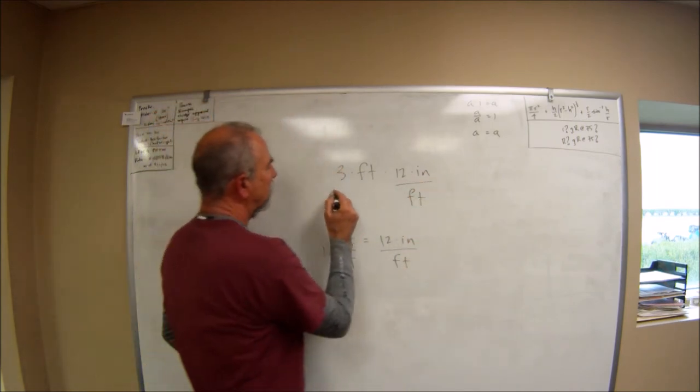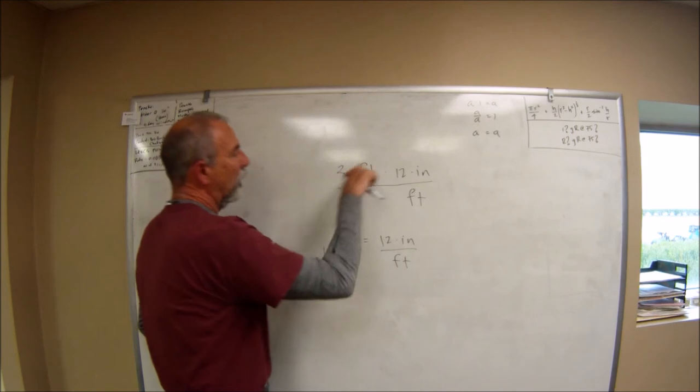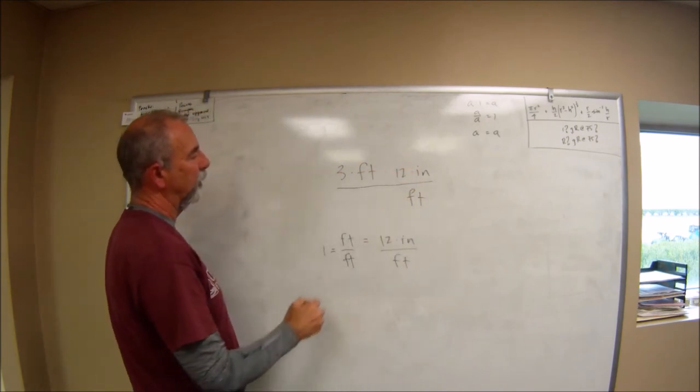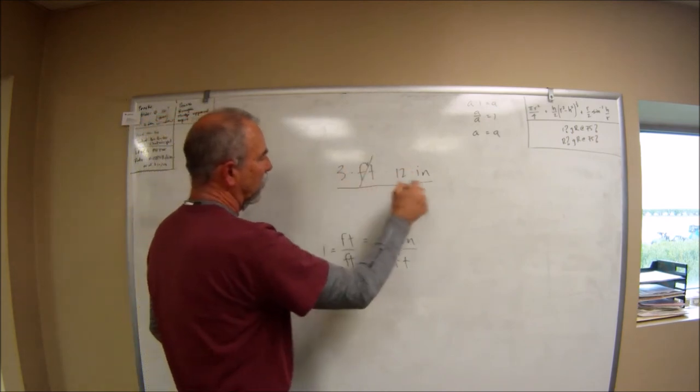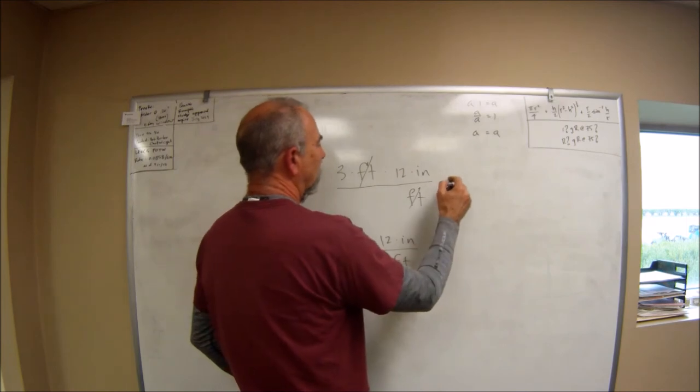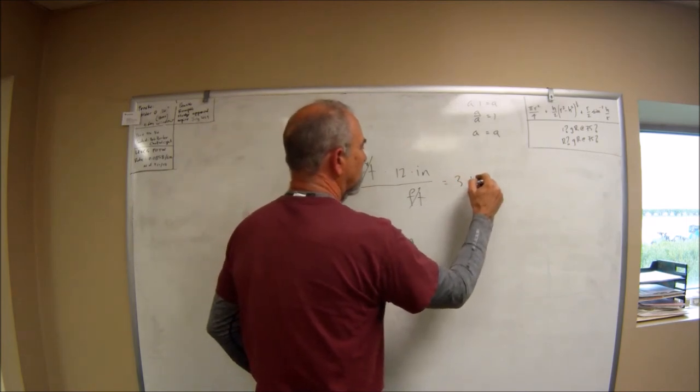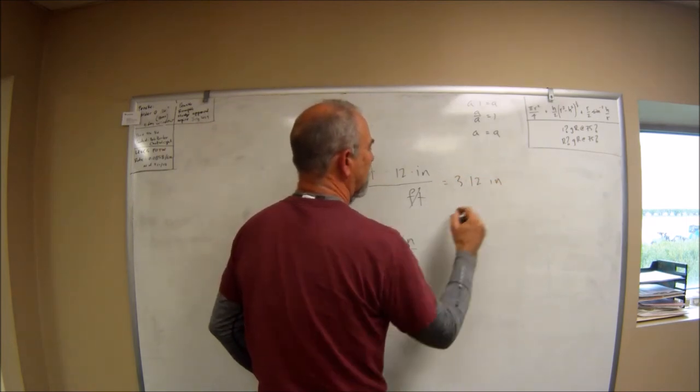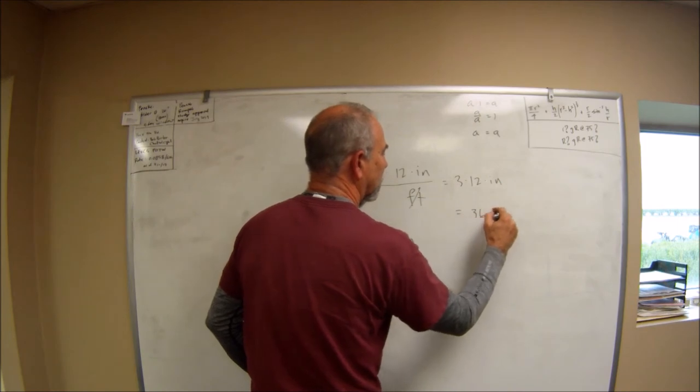And with a little practice you recognize those are all numerator terms, that's a denominator term, we got foot over foot, they cancel, they're one. And we've got three times twelve times inch, which equals 36 times an inch.